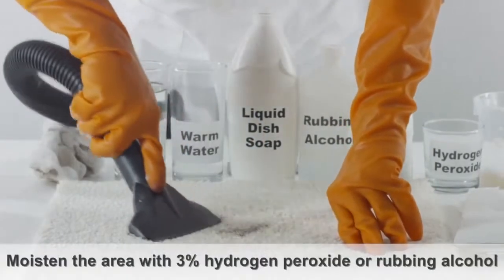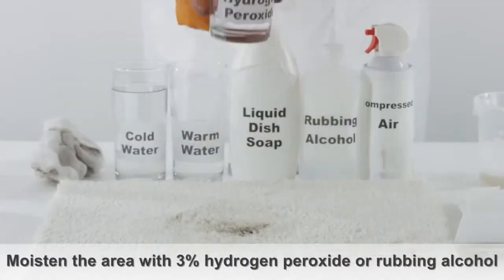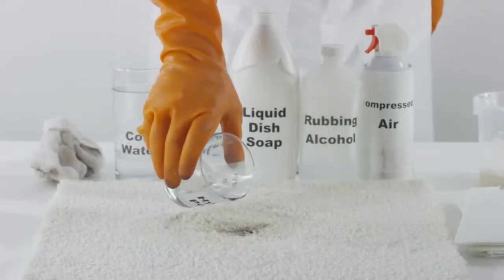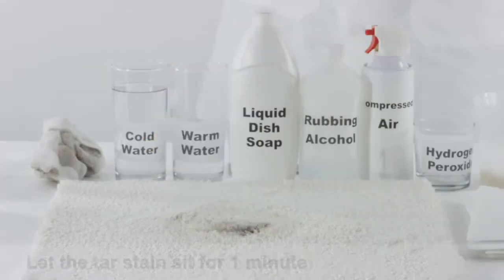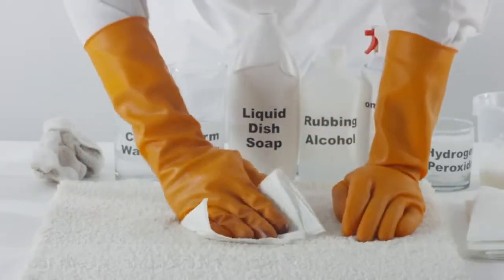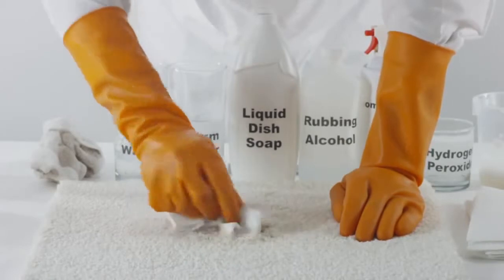Another method is to moisten the affected area of the carpet with 3% hydrogen peroxide or rubbing alcohol. Let the tar stain sit for one minute. Blot with a paper towel to absorb any remaining stain.